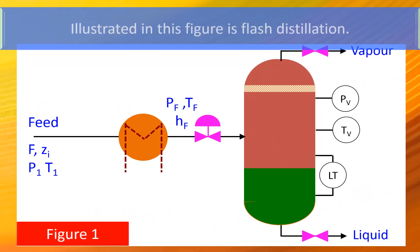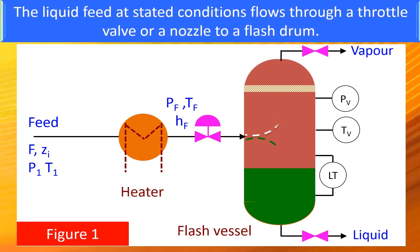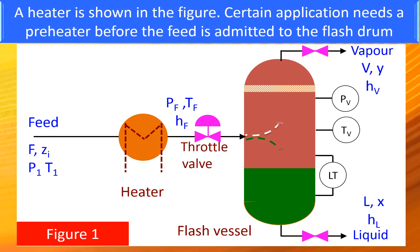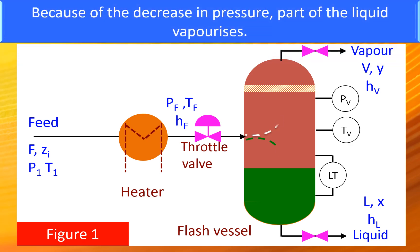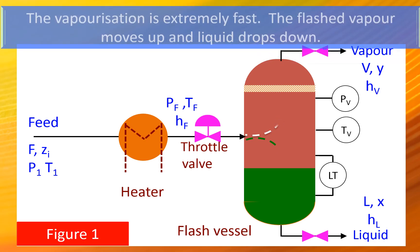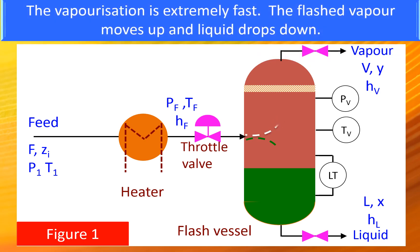Illustrated in this figure is Flash distillation. The liquid feed at stated conditions flows through a throttle valve or nozzle to the Flash drum. A heater is shown in this figure; certain applications need a preheater before the feed is admitted to the Flash drum. Because of the difference in pressure, part of the liquid vaporizes. The vaporization is extremely fast. The Flash vapor moves up and the liquid drops down.